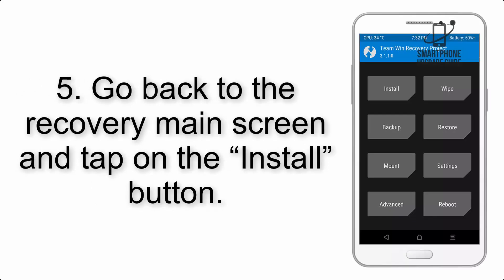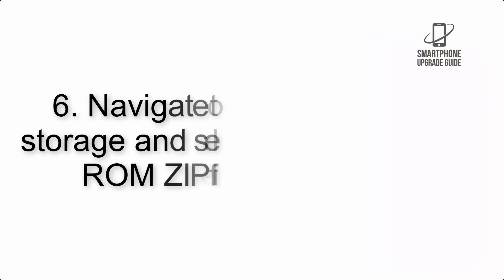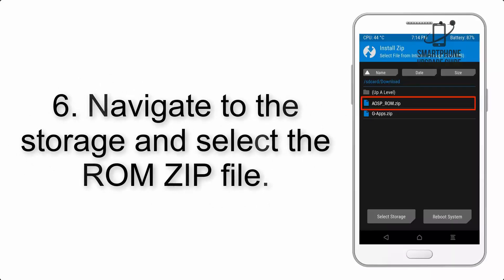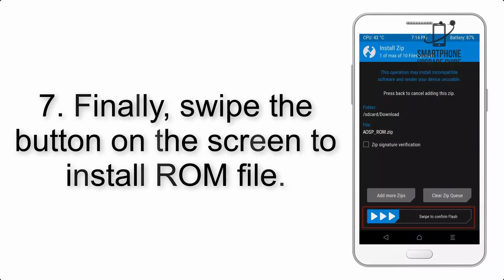Step 4: Swipe the button to wipe the device. Step 5: Go back to the recovery main screen and tap on the Install button. Step 6: Navigate to the storage and select the ROM zip file.